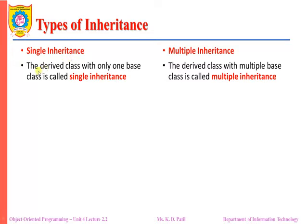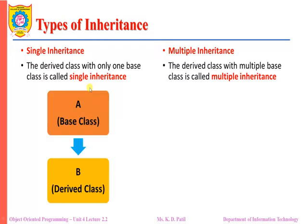Now let us see the different types of inheritance. There are specifically five types: single inheritance, multiple inheritance, hierarchical inheritance, multi-level inheritance, and hybrid inheritance. Let us see each one briefly.